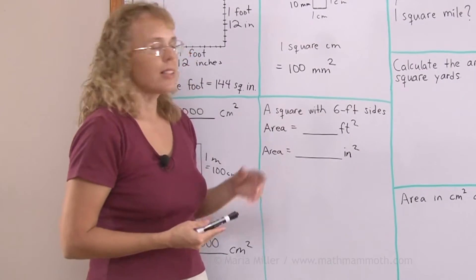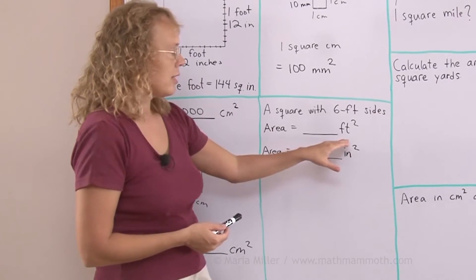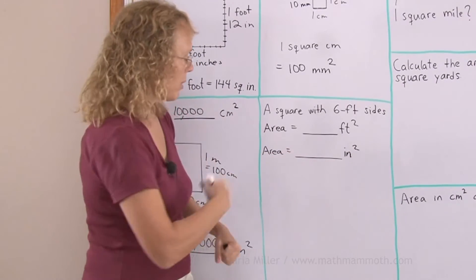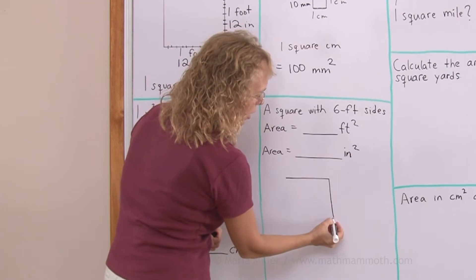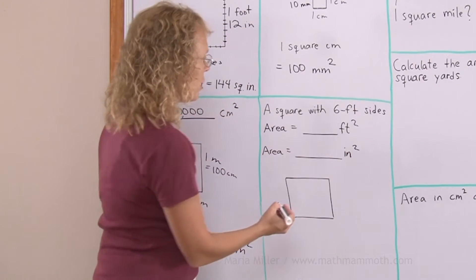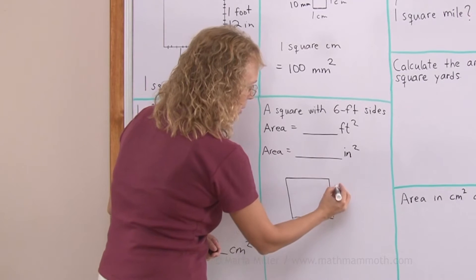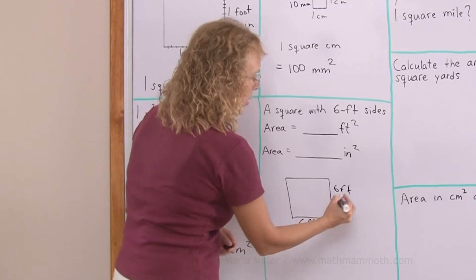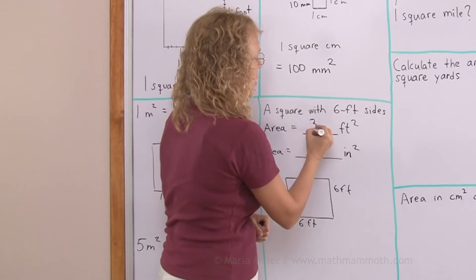Let's say we have a square with six-foot sides. What is its area in square feet and square inches? I'll sketch it again. It always helps to sketch when you have a geometry problem. It helps you think, this side is six feet. So in square feet, of course, all you do is multiply six times six and you get 36 square feet.